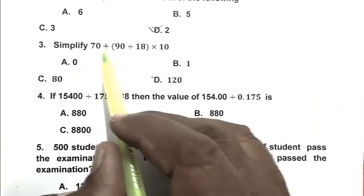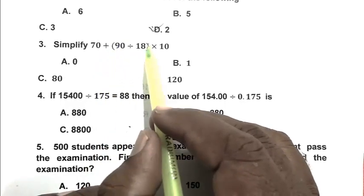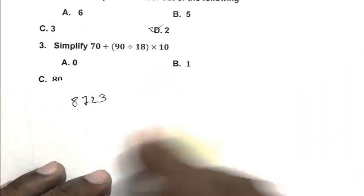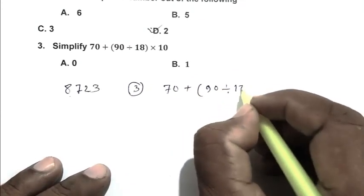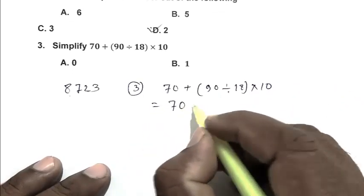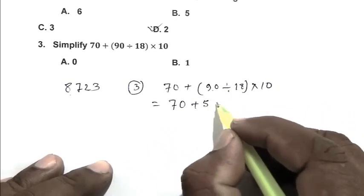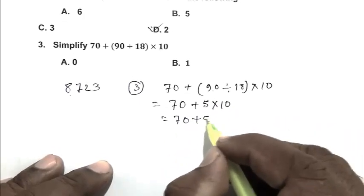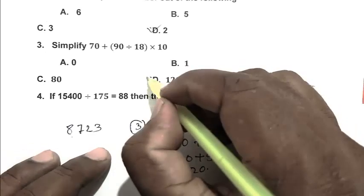Question number 3: Simplify 70 plus, bracket 90 divided by 18, bracket close, multiplied by 10. So we write the expression: 70 plus 90 divided by 18 multiplied by 10. That is 70 plus, we divide it, we got 5 multiplied by 10. That is 70 plus 50, which equals 120. So D is the right answer.